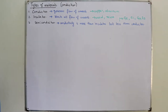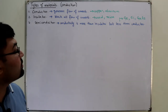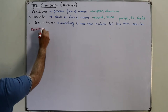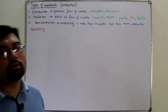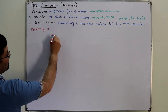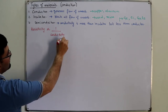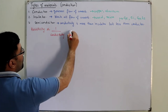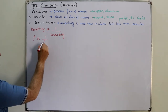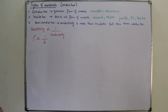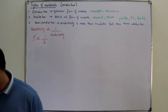Resistivity is the opposition to the flow of current, which is the inverse of conductivity. Conductivity is the ability to conduct current, so rho (resistivity) is inversely proportional to sigma (conductivity). These values are fixed for every material. If resistivity is high, current is low.